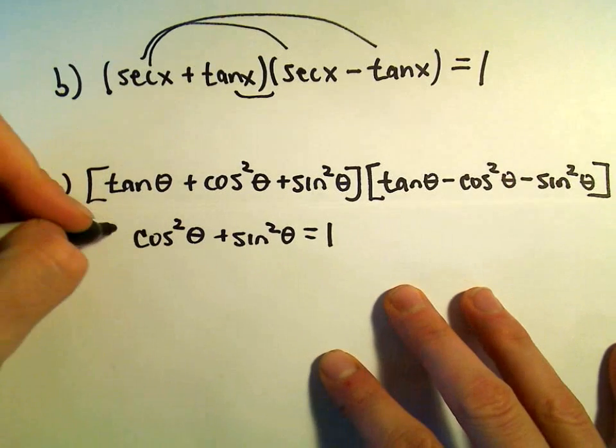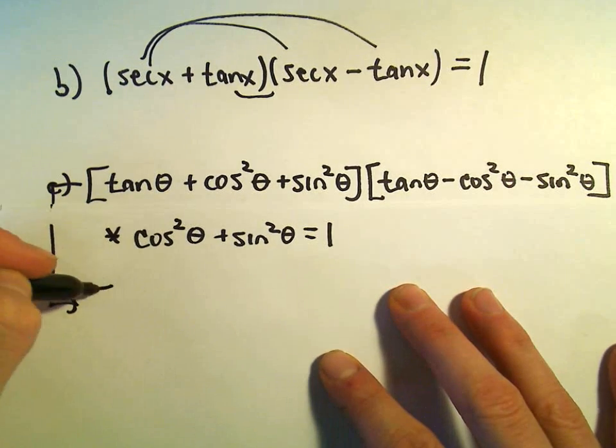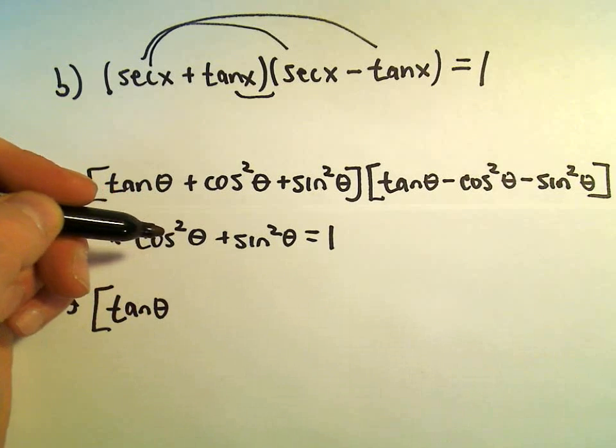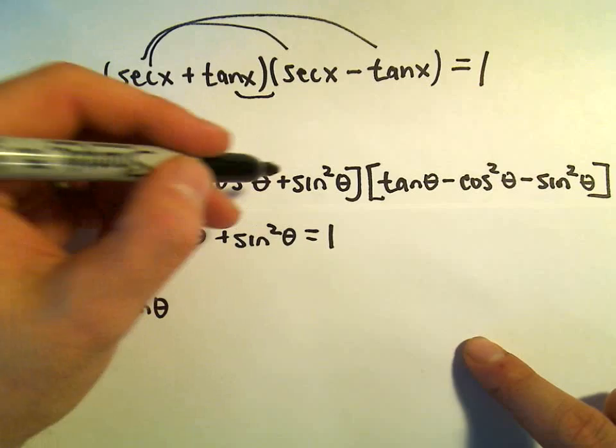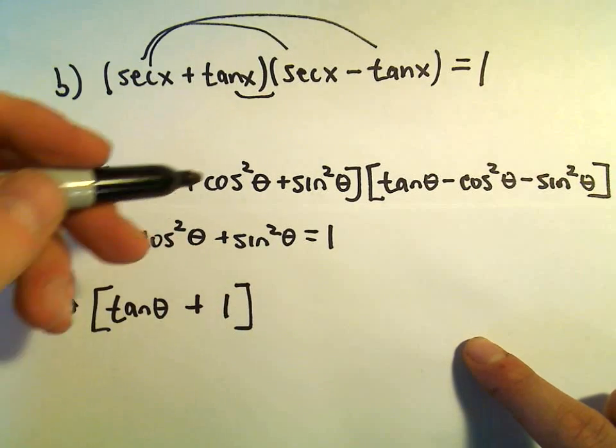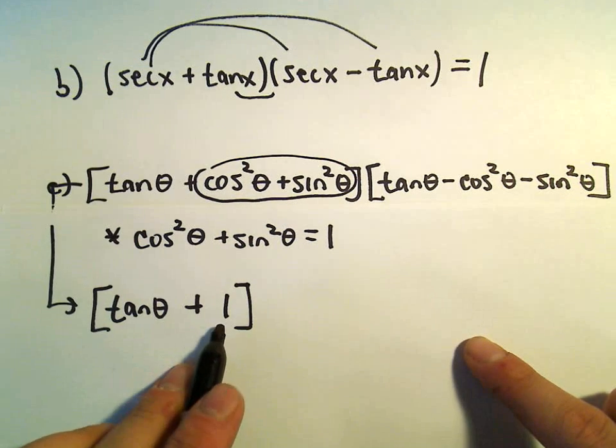So I'm going to rewrite this whole expression. We have tangent of theta. Maybe we can already replace our cosine squared plus sine squared. We'll go ahead and replace that with our positive 1. So just regrouping all that stuff and replacing it with a plus 1.